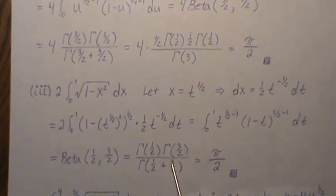Plug in the gamma, the values to the gamma functions, and we get π over 2.